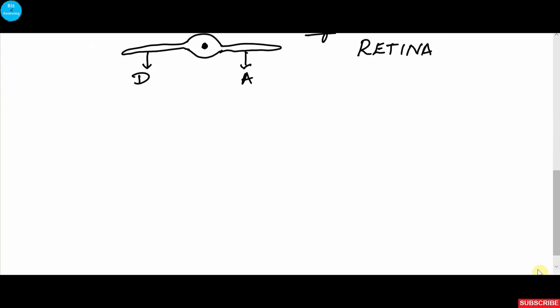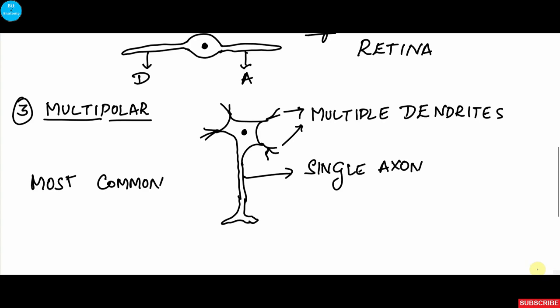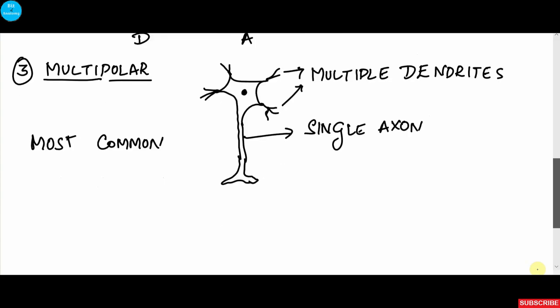The third and most common type is the multipolar. It contains multiple poles which act as dendrites and only one acts as an axon. There are multiple dendrites and a single axon. This is the most common type present in most parts of the nervous system.